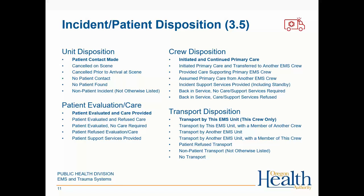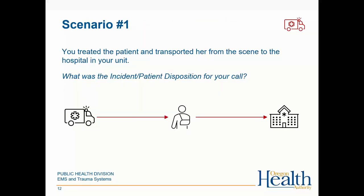To indicate a call where you treated a patient and transported them, you would pick: patient contact made for unit disposition; patient evaluated and care provided for patient evaluation and care; initiated and continued primary care for crew disposition; and transported by this EMS unit with this crew only for transport disposition. Even though we're replacing one element with four elements, the plan is to complete this section of your PCR more quickly by having less to look through, and more accurately. We're going to run through three scenarios using Poll Everywhere to illustrate how you can complete your report more accurately and quickly.